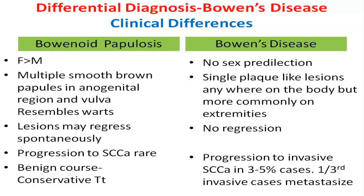Bowenoid papulosis may regress spontaneously, while Bowen's disease does not. Bowen's disease shows progression to invasive squamous cell carcinoma in three to five percent of cases, of which one third of cases metastasize. In bowenoid papulosis, progression to squamous cell carcinoma is rare, and this condition has a benign clinical course and is treated conservatively.